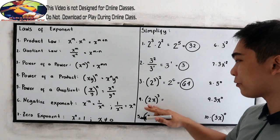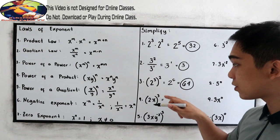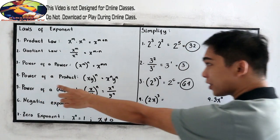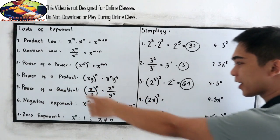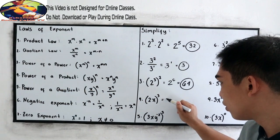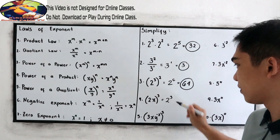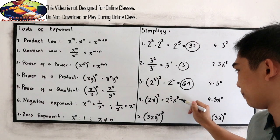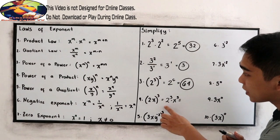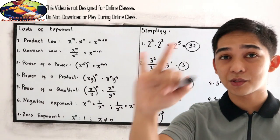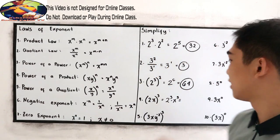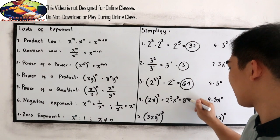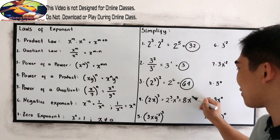Number 4: quantity 2x raised to 3. We apply law number 4, power of a product. This equals 2 cubed times x cubed. Simplifying 2 cubed: 2 × 2 × 2 gives us 8. So the answer is 8x cubed.